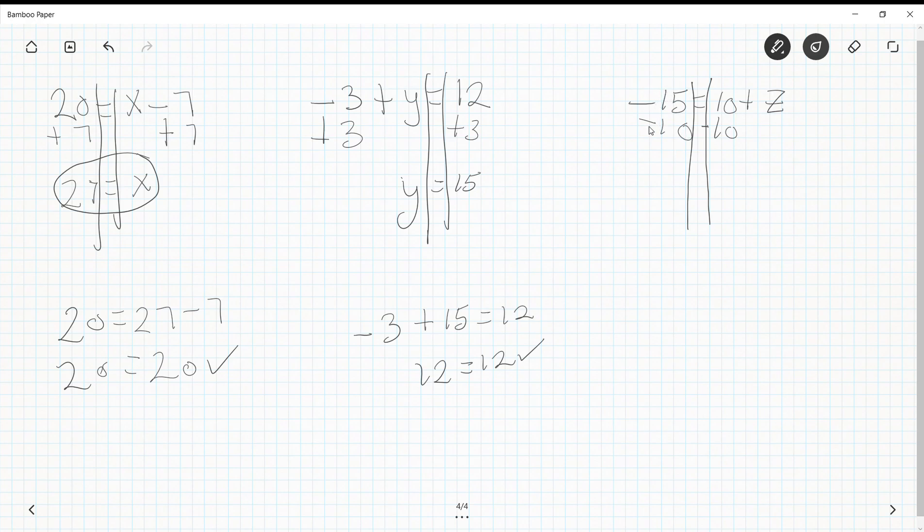Well, I have a negative minus a positive, so it's going to become more negative. Negative 15 minus 10 becomes negative 25 equals 10 minus 10 is 0, equals z. So let's just check to make sure that works. Negative 15 equals 10 minus 25. 10 minus 25 is, in fact, negative 15, and we found our answer.